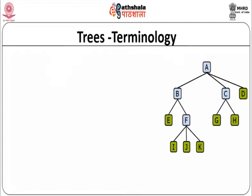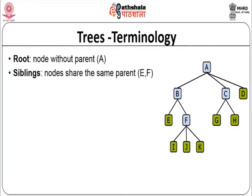Let us look at the terminology here. The root node is a node without a parent, and that is A in this example. Siblings are nodes which share the same parent. For example, E and F are siblings because they share the same parent B. Siblings are brothers and sisters in normal terms.